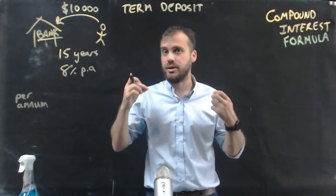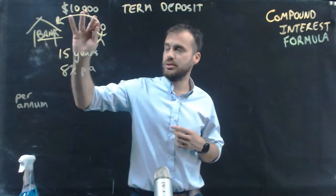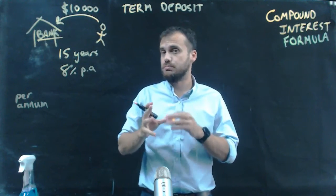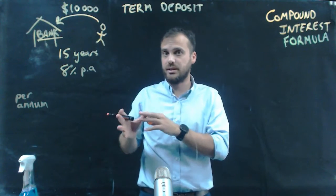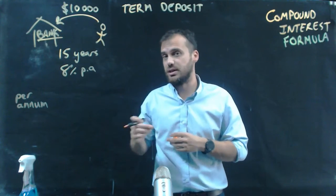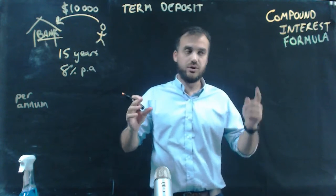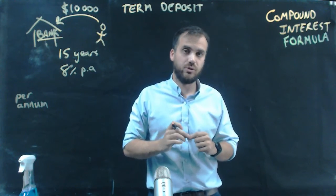Now, just with these three pieces of information, we can figure out how much money will be in our bank account when we pull it out in 15 years' time, when we're ready to make our big purchase. So we're going to use our compound interest formula.